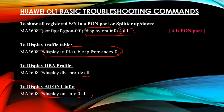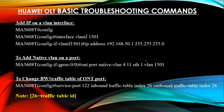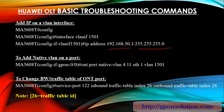To add an IP address on a VLAN interface, go to config mode, then enter 'interface vlanif 1500', then configure the IP address and subnet mask using the 'ip address' command.